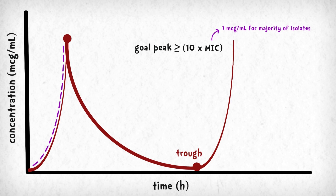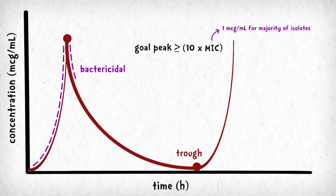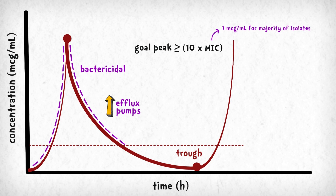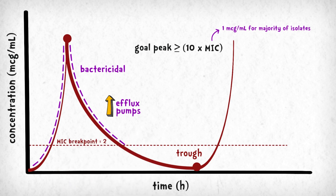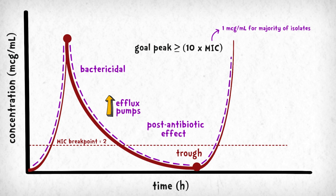After we administer a dose, gentamicin will have great bactericidal action for several hours. As the level falls, the bacteria upregulate their efflux pumps to pump out the gentamicin from their cells. It's only when the level falls below the MIC breakpoint that the bacteria turn off their efflux pumps, which re-sensitizes the bacteria to gentamicin, meaning its activity continues for many hours after the level falls below the MIC breakpoint. This is known as the post-antibiotic effect.